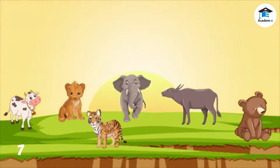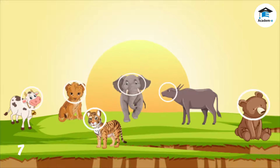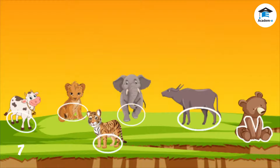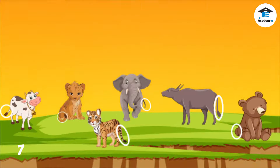What do these calves and cubs have in common? In what ways are they different? These calves and cubs all have the main body parts: head, body, and four legs. They all have a tail, too.